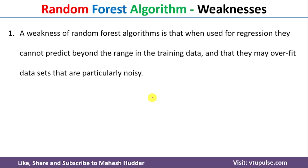Now for the weaknesses. For classification problems Random Forest works perfectly fine, but for regression problems it does not predict beyond the range of the training data. For example, if the target column ranges from 1 to 100, it will only work within that range — it won't predict values beyond 100 or below 1. Additionally, when data contains noise, there is a possibility that the Random Forest may go into overfitting.